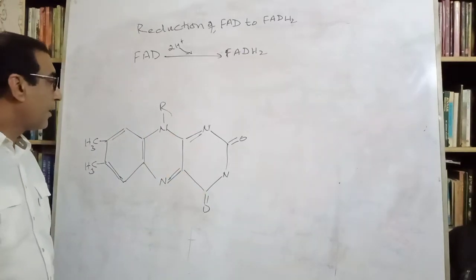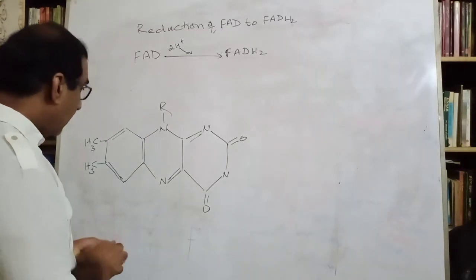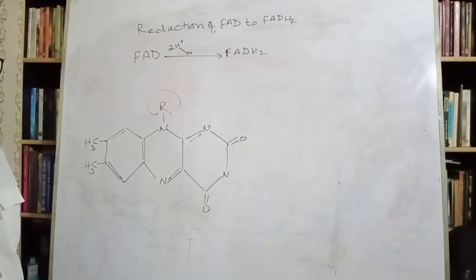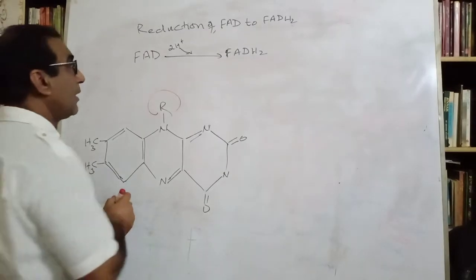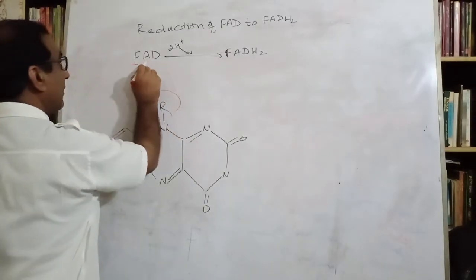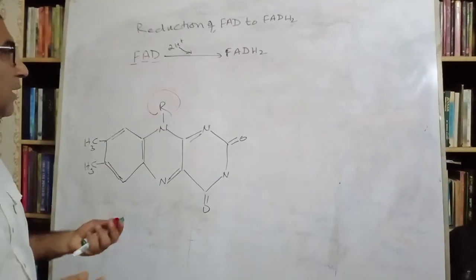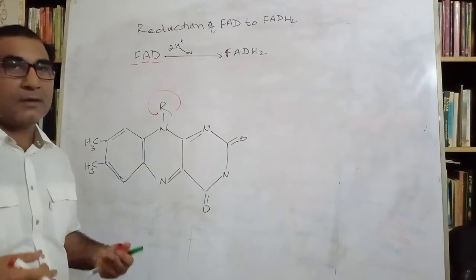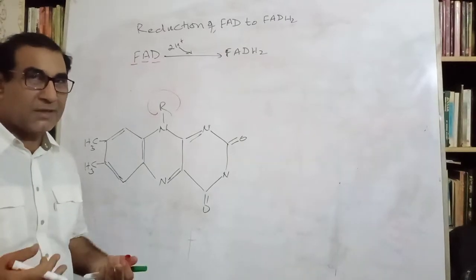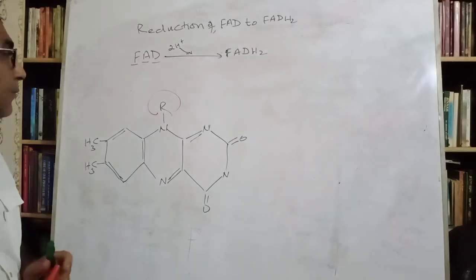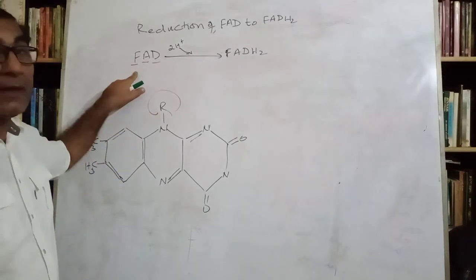So what is this R? We'll have to understand it. Why do we call it Flavin Adenine Dinucleotide? You have studied the nucleotide of Adenine, Guanine, Cytosine, Thiamine, Uracil. Those are all mononucleotides. This is a dinucleotide.